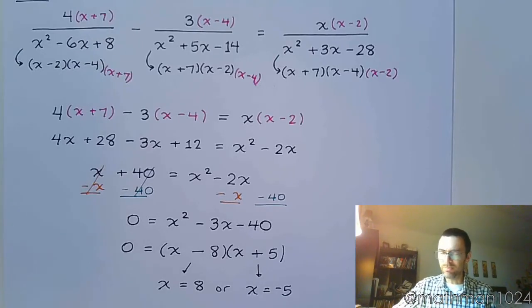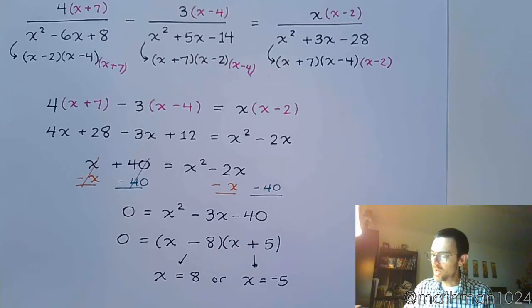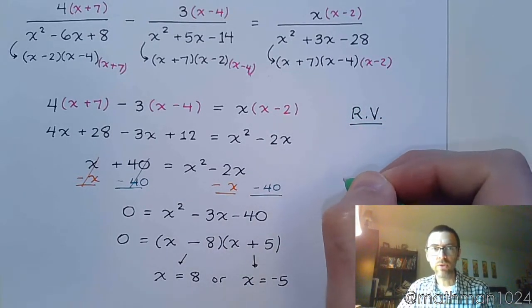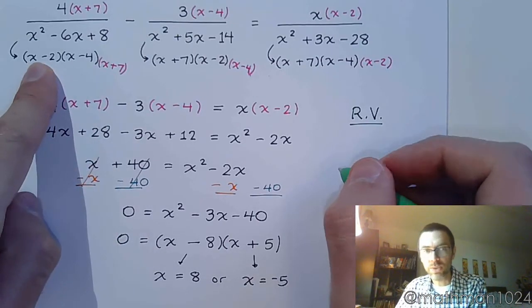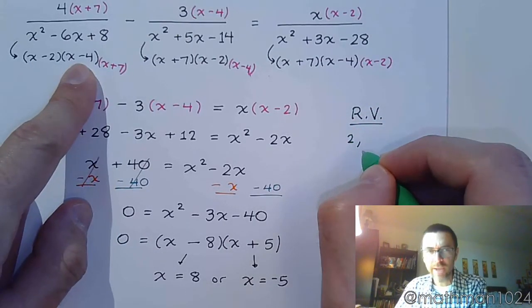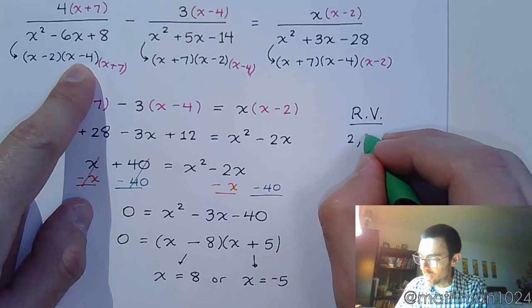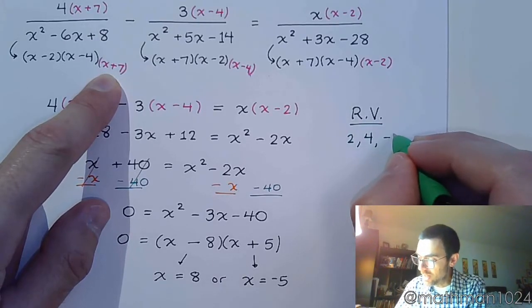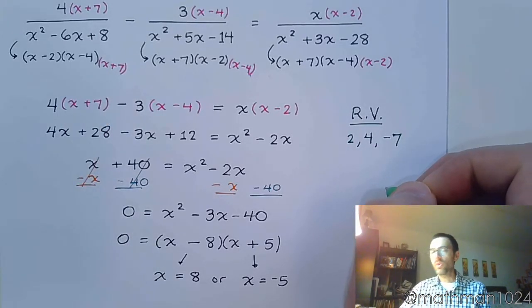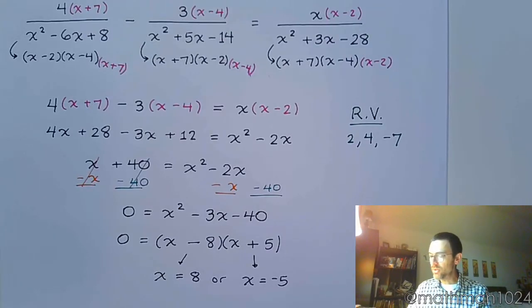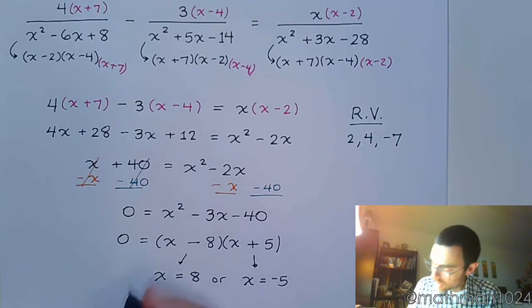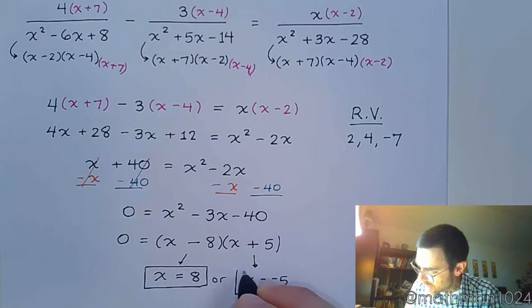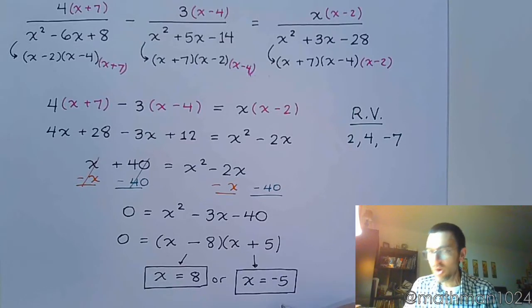And again, before we start boxing our answers, you want to make sure that you have identified any and all restricted values. So what makes this guy equal 0? 2, (x - 4) means that x = 4 is a restricted value, and from the factor (x + 7), negative 7 is a restricted value. So do we have any restricted values for our solutions? No. So that means x = 8 and x = -5 are our two solutions.